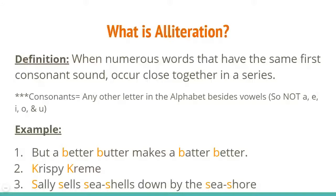So what does alliteration look like in writing? Well, peanut butter picked a pipe of pickled peppers — where's the pipe of pickled peppers? See, I even messed it up, but you get the gist. The P sound is being repeated. Here's some more examples.